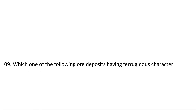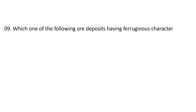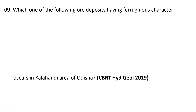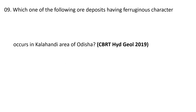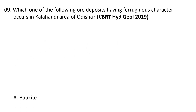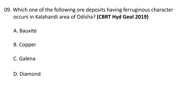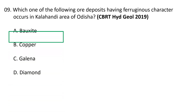Next question. Which one of the following ore deposits having ferruginous character occurs in the Kalahandi area of Odisha? A. Bauxite, B. Copper, C. Galena, D. Diamond. The correct answer is A — Bauxite.